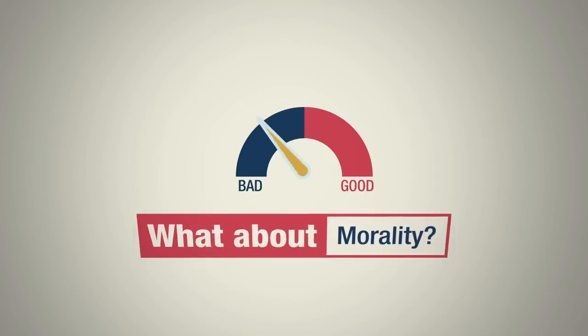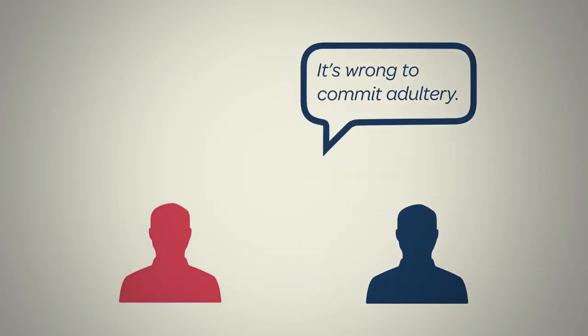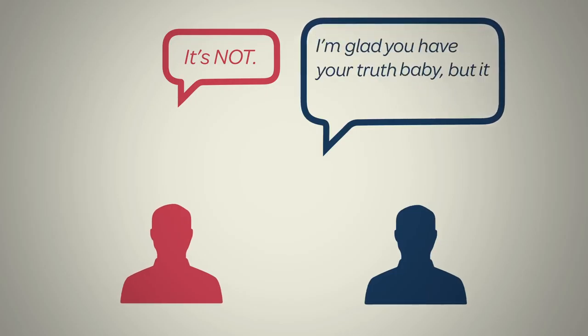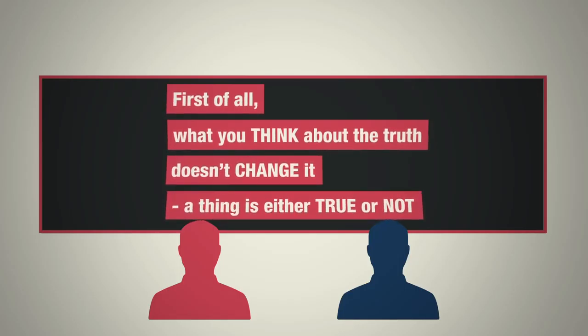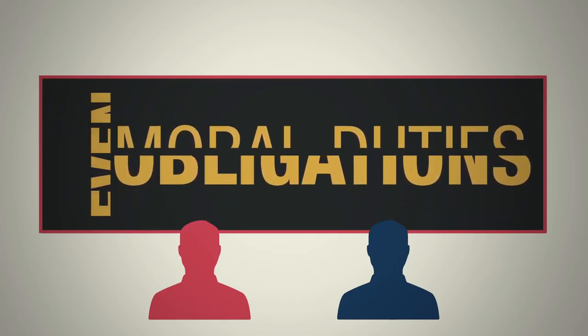But what about morality? Ah, that's the big one. One person thinks it's wrong to commit adultery, and another thinks it's not. So the one might say, I'm glad you have your truth, baby, but it doesn't work for me. First of all, what you think about the truth doesn't change it. A thing is either true or not, even moral duties and obligations.